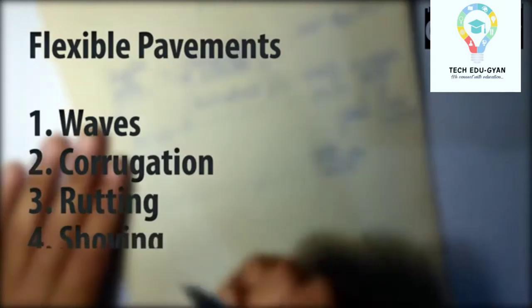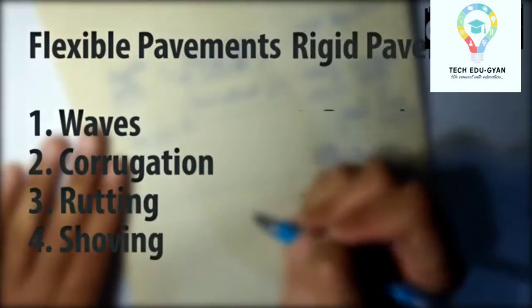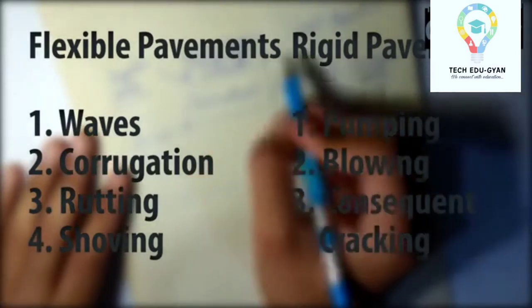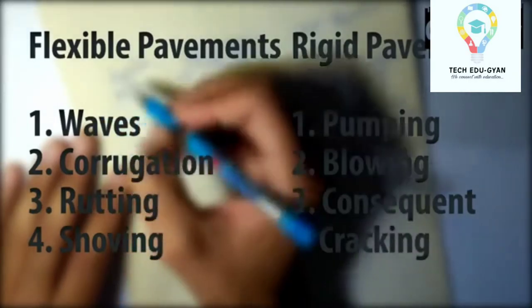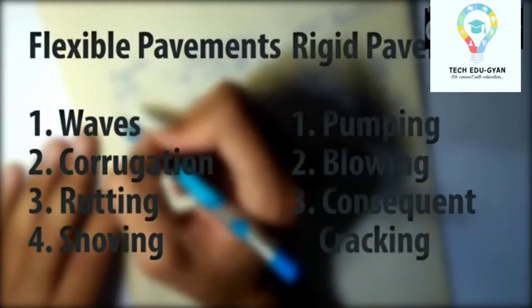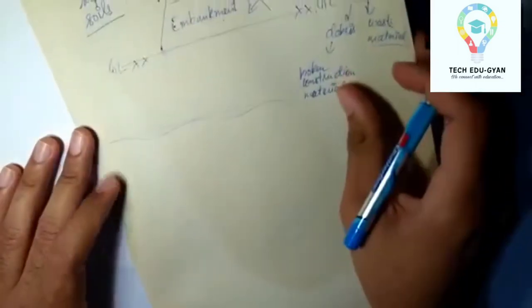Whereas the phenomenon of pumping, blowing and consequent cracking in cement concrete pavements is due to poor subgrade conditions. So our subgrade is given the most importance and it is made up of superior soils.